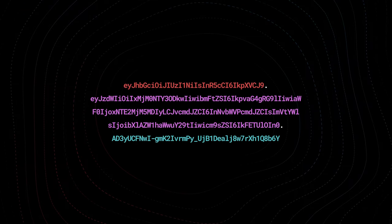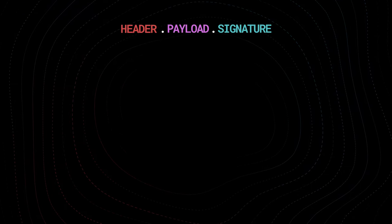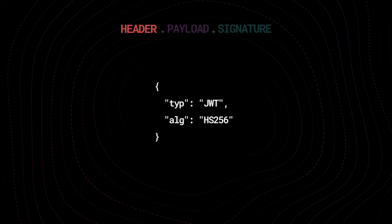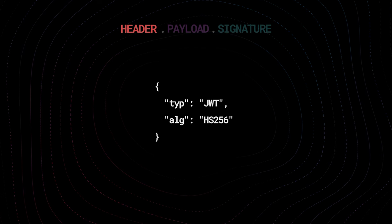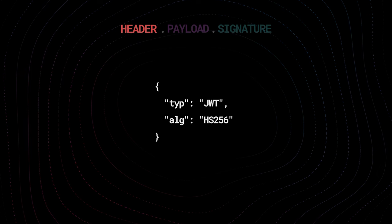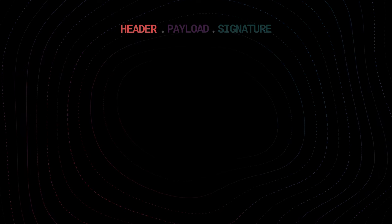Let's take a deeper look into the anatomy of a JSON web token. It consists of three parts. The first part is the header — it contains some metadata about the token, like what type of token it is (it's a JSON web token) and the algorithm that is being used to create the signature, which we're going to talk about in just a minute.